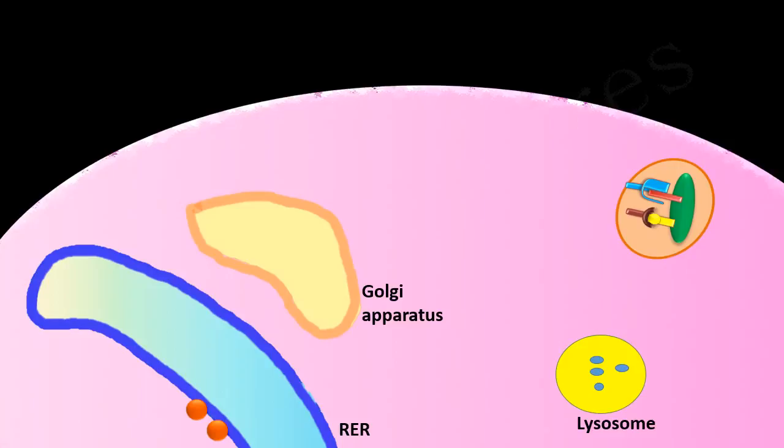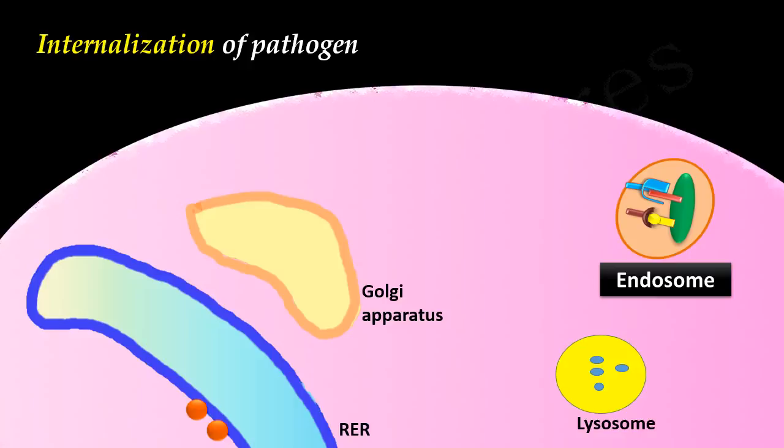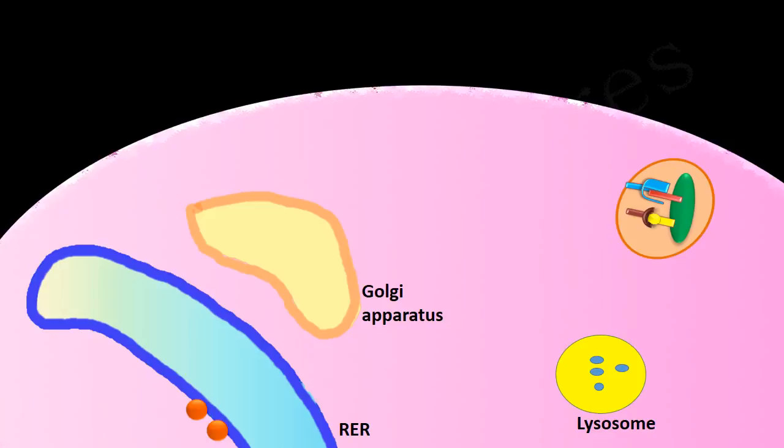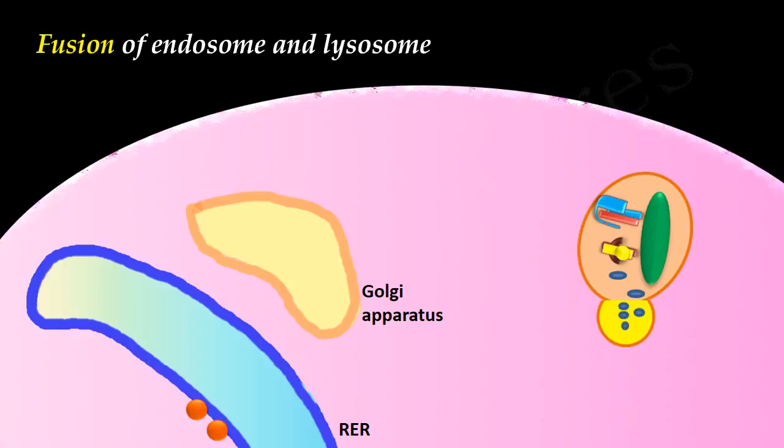When an antigen-presenting cell internalizes a pathogen, it internalizes it into an intracellular vesicle known as an endosome. In the next step, this endosome fuses with a lysosome to form an endolysosome. In the endolysosome, the internalized pathogens are digested by proteolytic lysosomal enzymes into small peptide fragments.